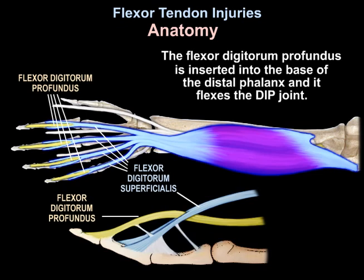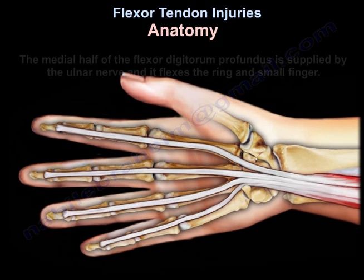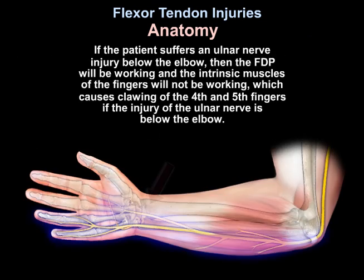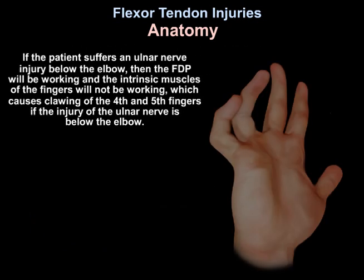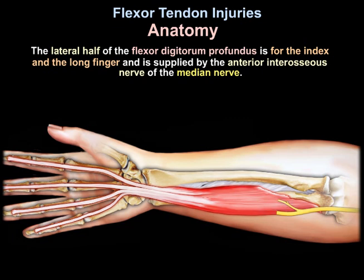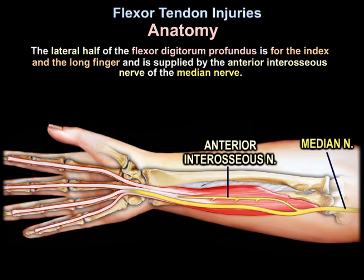The flexor digitorum profundus inserts into the base of the distal phalanx and flexes the DIP joint. The medial half of the FDP is supplied by the ulnar nerve and flexes the ring and small fingers. If a patient suffers an ulnar nerve injury below the elbow, the FDP will be working but the intrinsics will not, causing clawing of the fourth and fifth fingers.